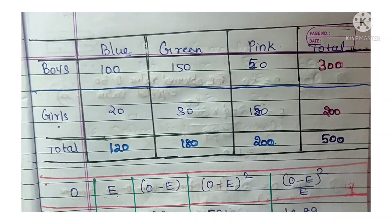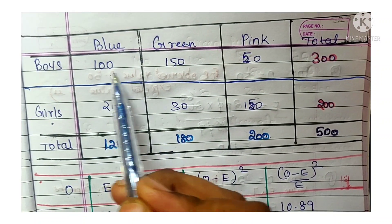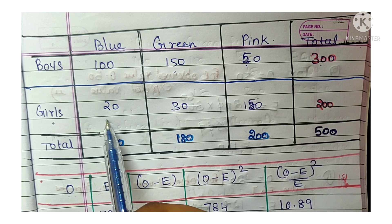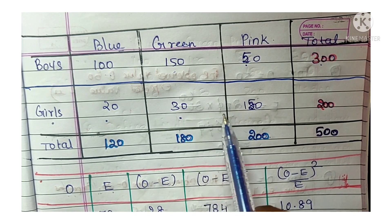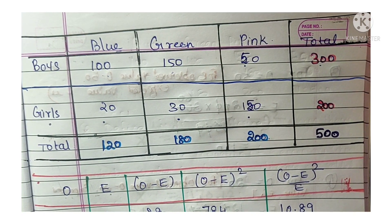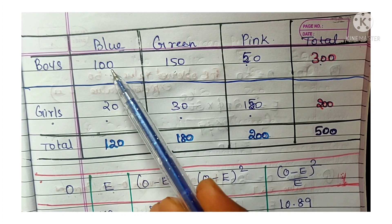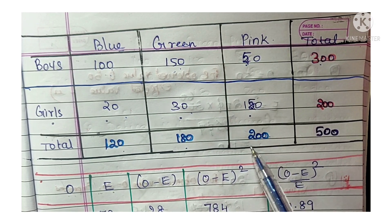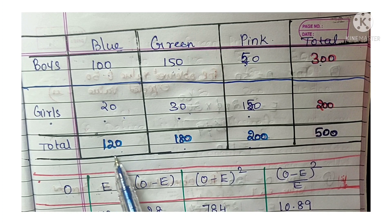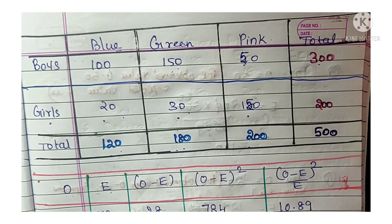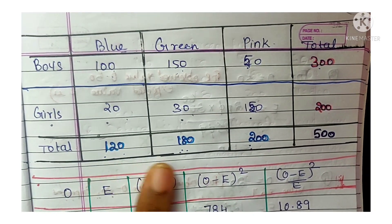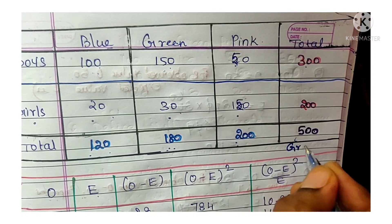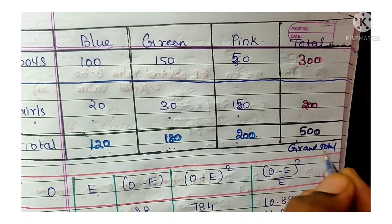Row-wise totals: boys — 100 + 150 = 250, plus 50 = 300. Girls — 20 + 30 = 50, plus 150 = 200. Column-wise totals: blue — 100 + 20 = 120; green — 150 + 30 = 180; pink — 50 + 150 = 200. Grand total: 300 + 200 = 500, confirmed as 120 + 180 + 200 = 500.